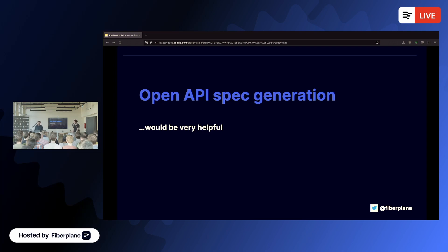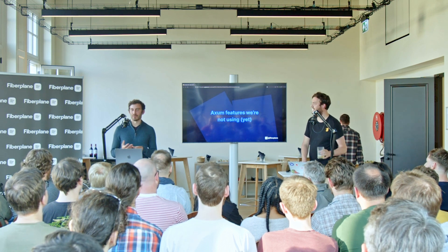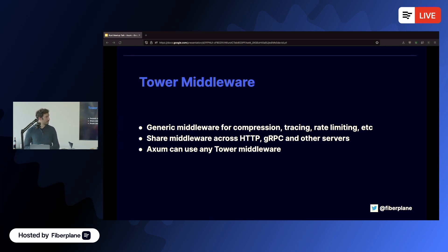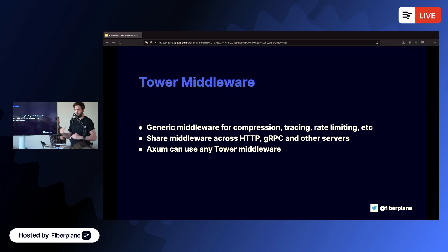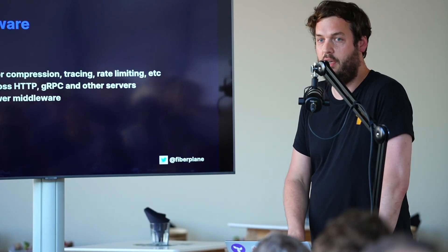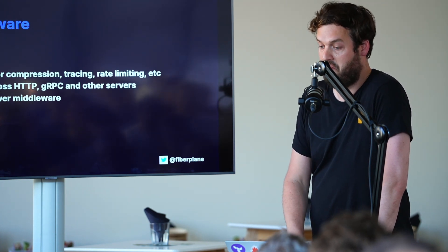Some Axum features we're not using yet: tower middleware. Axum is built on top of Tower, which is yet another layer, but there's already a lot of middleware created for Tower — such as compression, rate limiting, and other things. That's very useful to take advantage of. At the moment we haven't delved into it too deeply, but I definitely think there are some things that can be useful there.